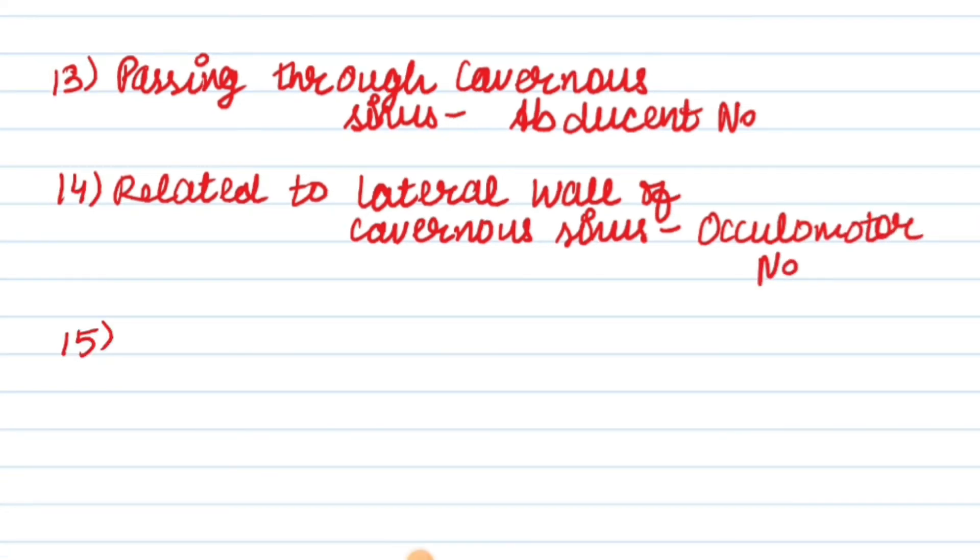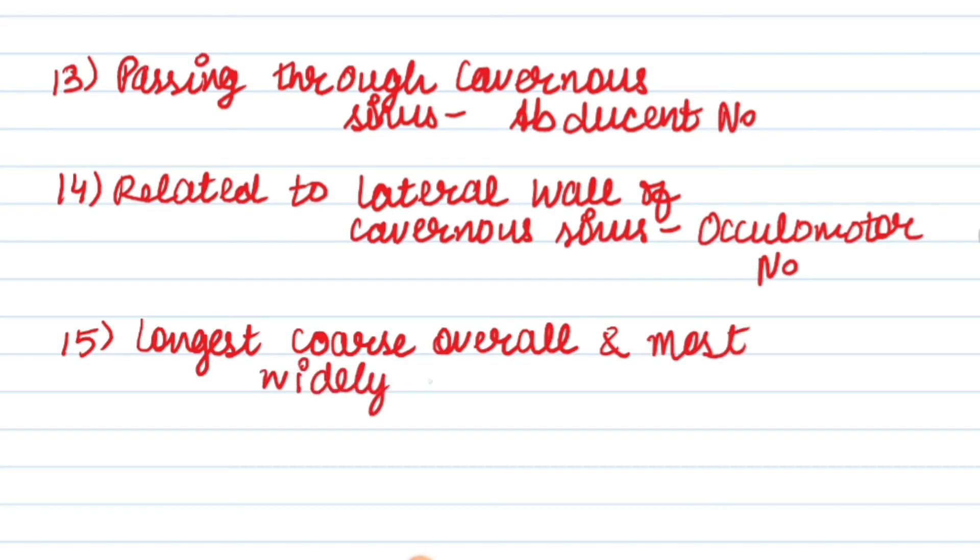Next point: which nerve has the longest course overall and is most widely distributed? It is vagus nerve, tenth cranial nerve.